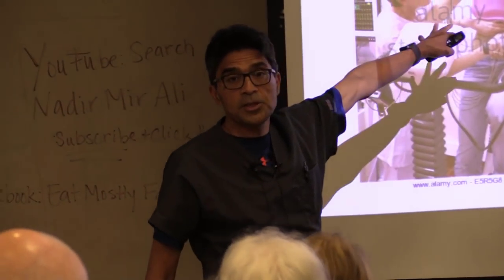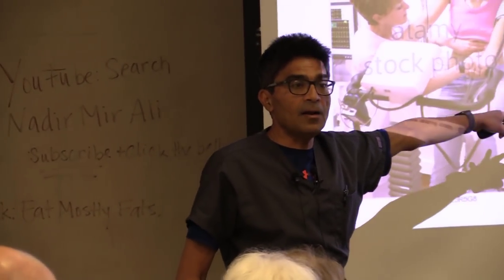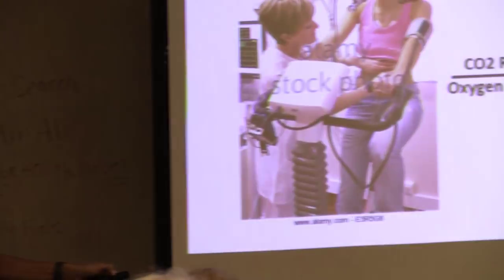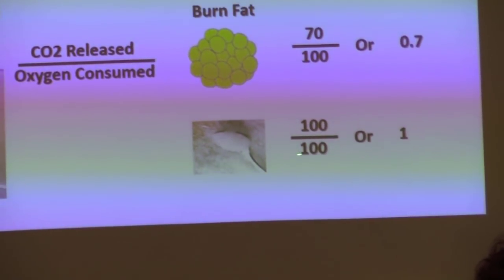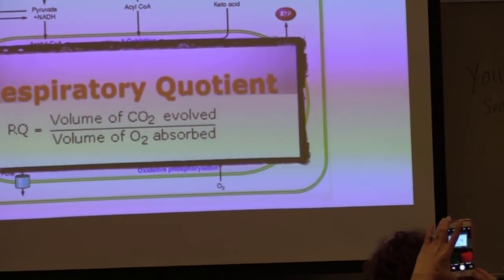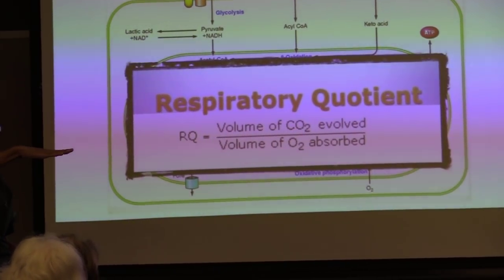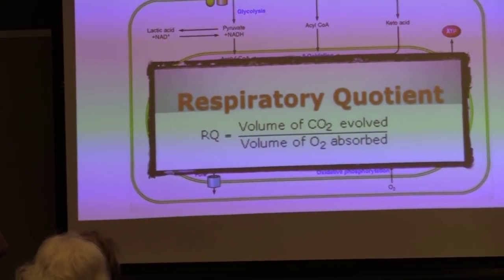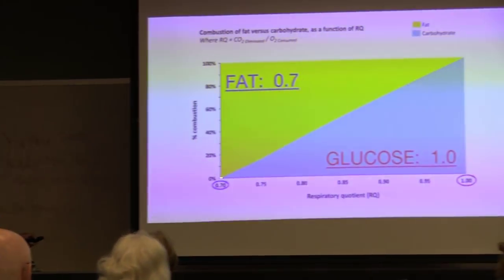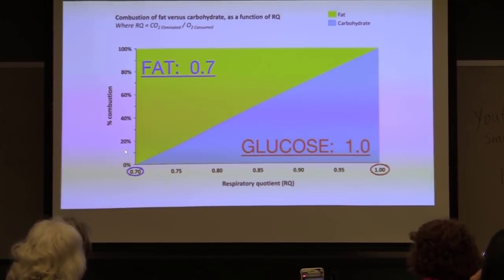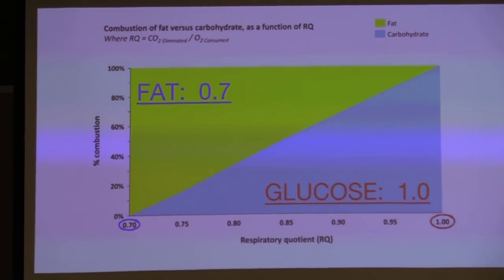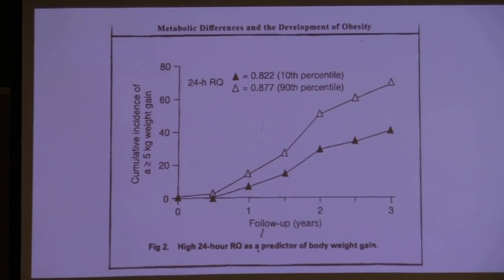I can put any of you on this machine and tell you whether you're burning fat or carbohydrates. If someone is eating sugar, they release the same number of carbon atoms as oxygen atoms consumed — so their respiratory quotient is 1. A lower respiratory quotient of 0.7 means you are fat-burning; a high respiratory quotient means you are carb-burning.